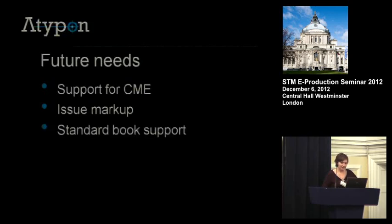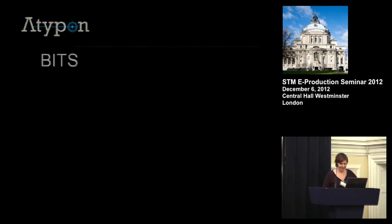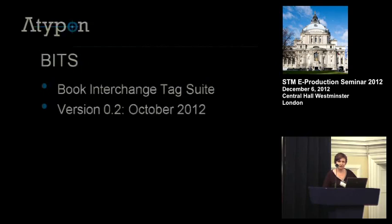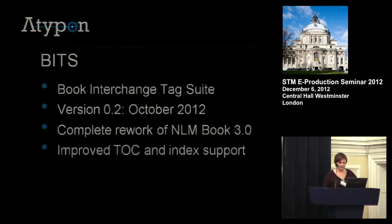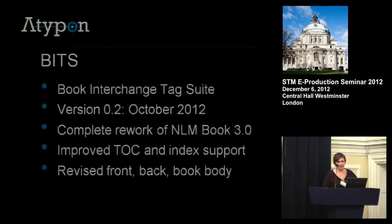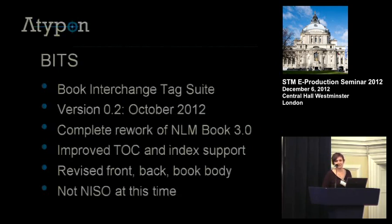The last thing I want to mention is standard book support, which brings us to BITS — the Book Interchange Tag Suite — which is now in draft form as of October 2012. What's new in BITS? It's a complete rework of the NLM Book 3.0 DTD, so it won't be backwards compatible with the NCBI 3.0 DTD. It has improved TOC and index support, with the TOC and index support taken from DocBook. There are also revised front, back, and book body wrappers that are extended and improved. Most of the innards at the chapter level are pretty much JATS-like. It's not a NISO standard at this time, but I would imagine that eventually BITS will join JATS as a NISO standard.